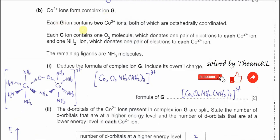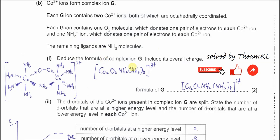Part B: cobalt(II) ions form complex ion G. Each G ion contains two cobalt ions, both of which are octahedrally coordinated. Each G ion contains one oxygen molecule which donates one pair of electrons to each cobalt, and one NH₂⁻ ion which has two lone pairs and donates one lone pair to each cobalt ion. The remaining ligands are ammonia molecules.